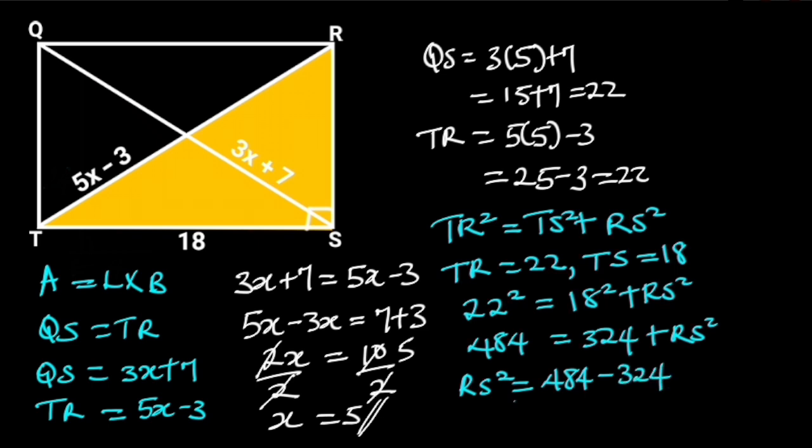484 minus 324 is 160. So, RS squared is equal to 160. Taking the square root of both sides will give us RS is equal to the square root of 160, which is equal to 4 root 10, which is the breadth of the rectangle.